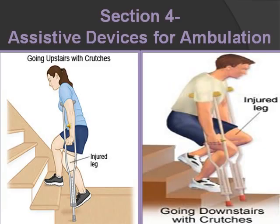Walking up and down stairs: remember 'up with the good, down with the bad.' To go up the stairs, hold the rail with one hand and the crutches with the other, go up with your good foot, then bring your bad foot with it. To go down, put your crutches and bad leg down first, then follow with your good leg.